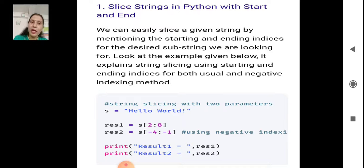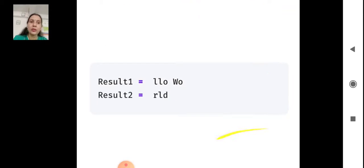Minus 4 plus 1 means we get the next value of minus 3, which is L, then again plus 1 we get D. So the output will be 'rld'.